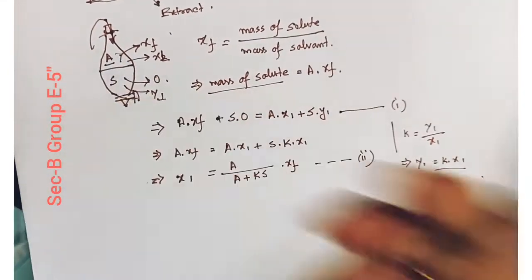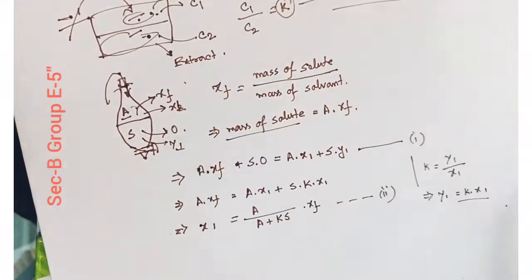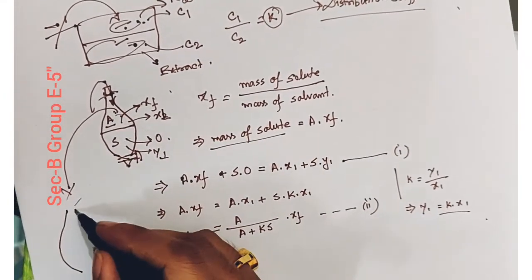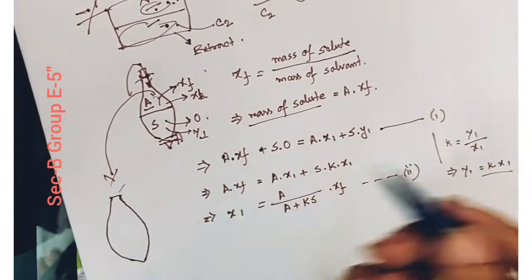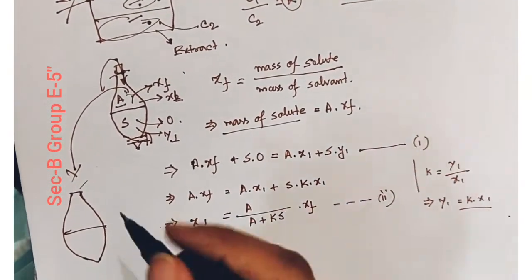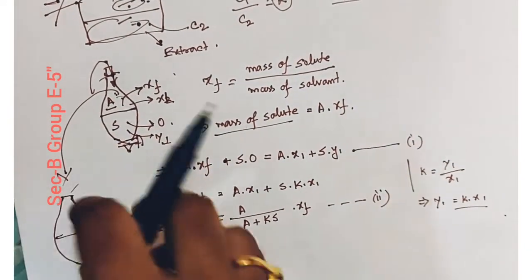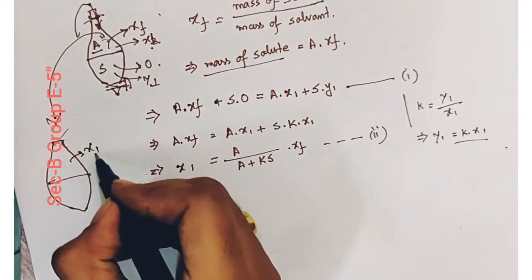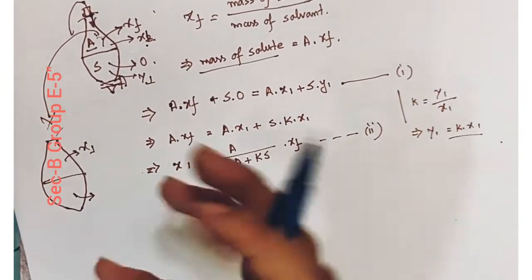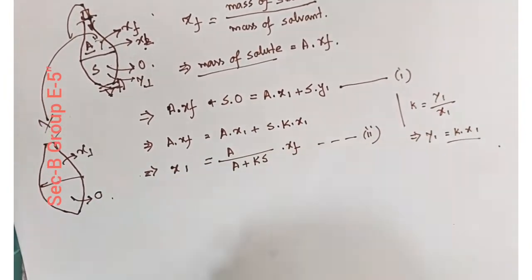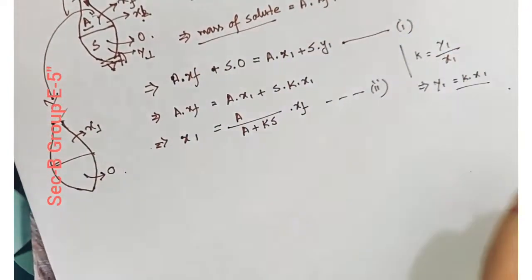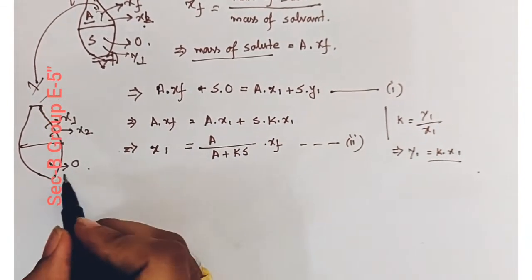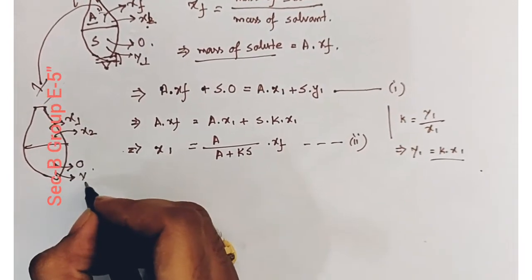If this raffinate is used as the feed for a second separating funnel, just after addition, the concentration of the feed in the raffinate portion of this second funnel is X1, and in the extract portion it is 0. After a certain period of time, due to the liquid-liquid extraction process, the concentration in the raffinate becomes X2 and in the extract portion it becomes Y2.